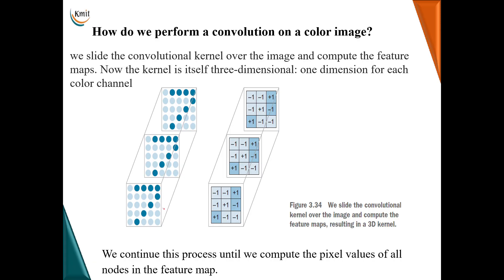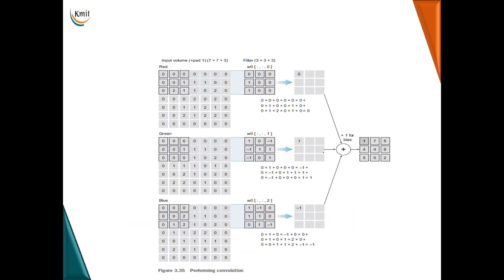For convolution on a colored image with three channels, each channel will have its own filter — the same convolution operation is performed and a feature map is generated for each channel. For example, with an image of 5×5 pixels, padding of 1, stride of 2, and a 3×3 kernel, the output will be a 3×3 matrix. Sliding the filter across each of the three channels with stride 2 generates one feature map per channel.